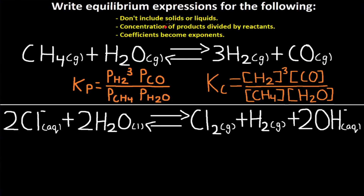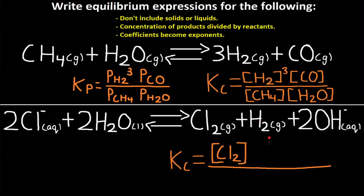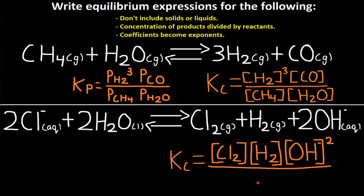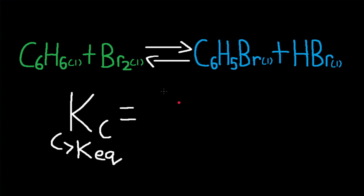For this reaction, let's look if there are any solids or liquids: aqueous, gas, gas, liquid, aqueous. H2O is a liquid, so we won't include it in Kc. Kc is equal to the concentration of products divided by reactants; coefficients become exponents. So we have Cl2 multiplied by H2 — they both have no coefficients, so no exponents — and lastly multiplied by OH⁻, which has a coefficient of 2, so an exponent of 2. Divided by the reactants: Cl⁻ has a coefficient of 2, so an exponent of 2. H2O, although it is a reactant, is a liquid and will not be included.